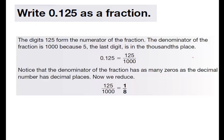Write 0.125 as a fraction. I'm going to do this one for you so you can see another example. The digits 1, 2, 5 form the numerator, so we put them on top. The 5 is in the 1,000th spot, so we put it all over 1,000, and then we reduce that down to 1/8. That's how we would convert a decimal of 0.125 into a fraction of 1/8.